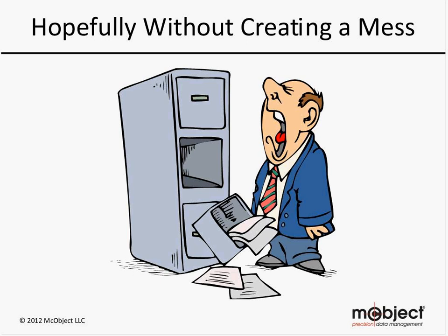Database systems are no different than file cabinets in that you can make a mess. Different database system approaches can make it easier or harder to make a mess. For example, a relational database encourages you to organize things into tables of rows and columns. On the other hand, a key-value store is like the wild, wild west — there's little or no law enforcement.